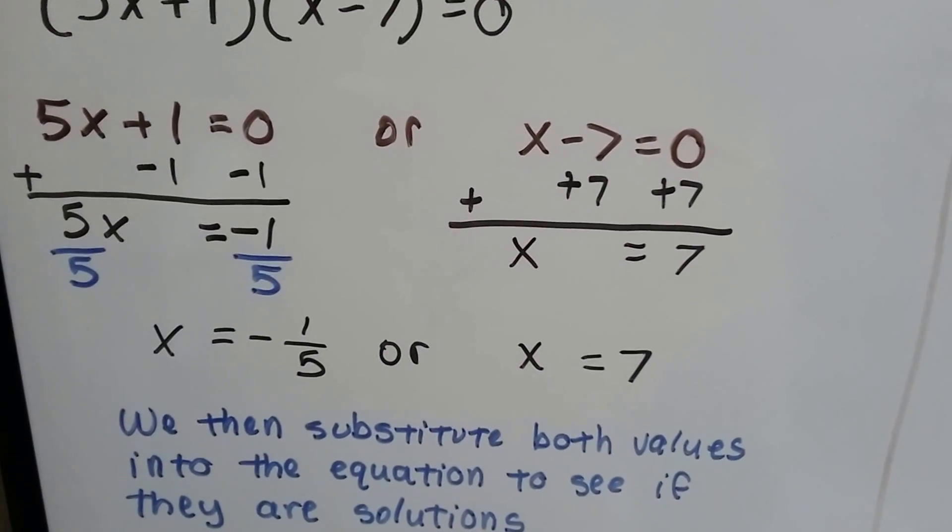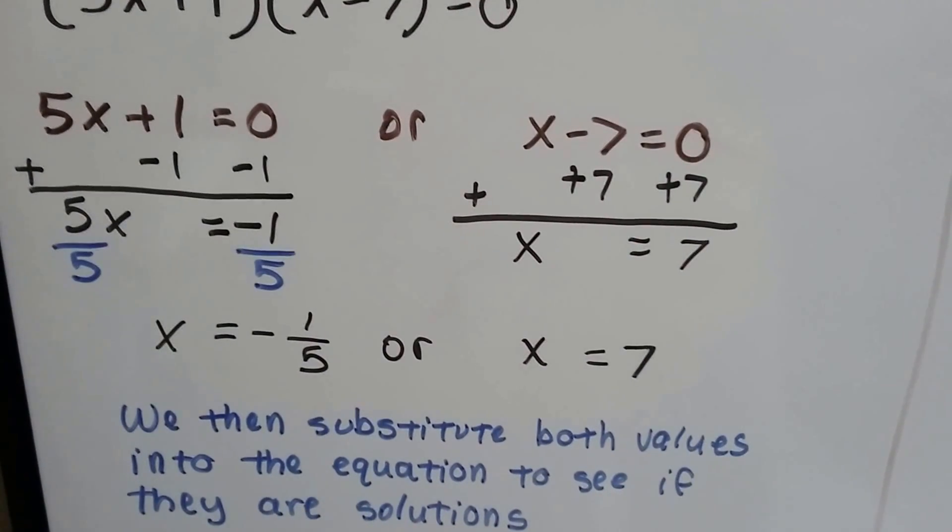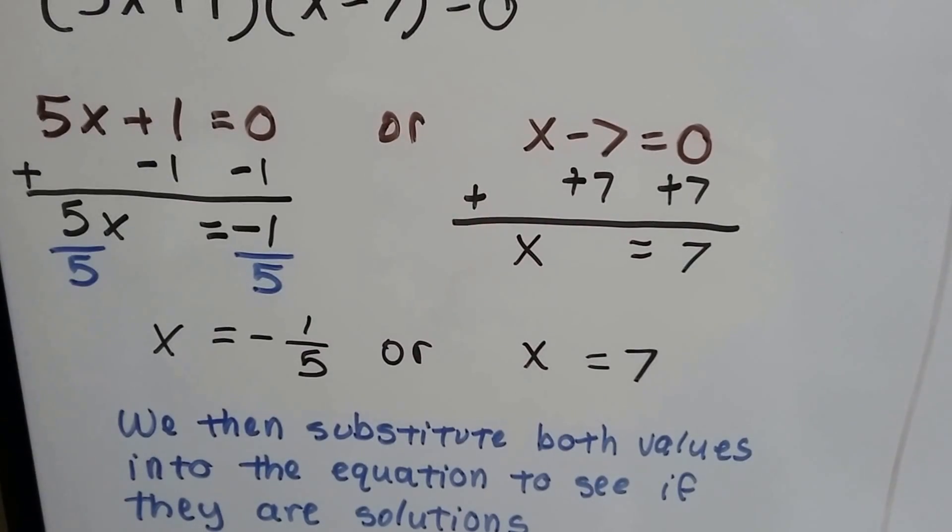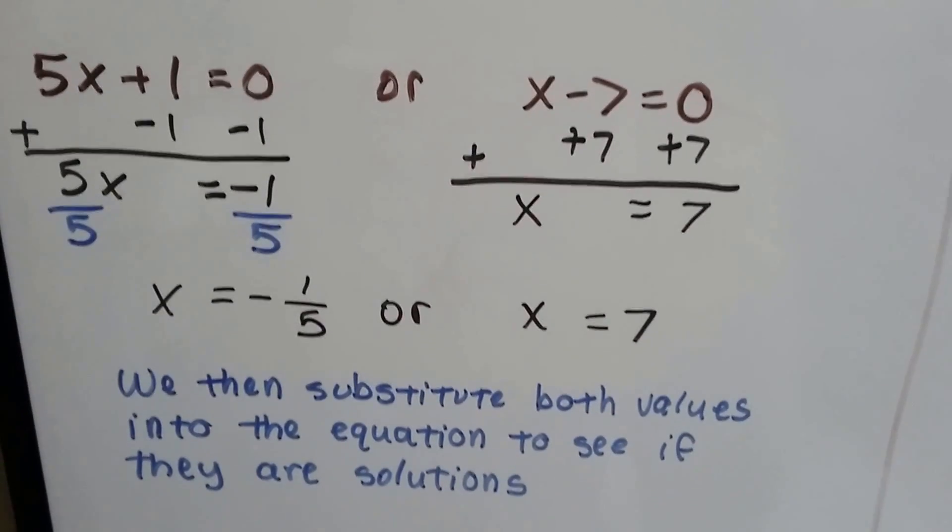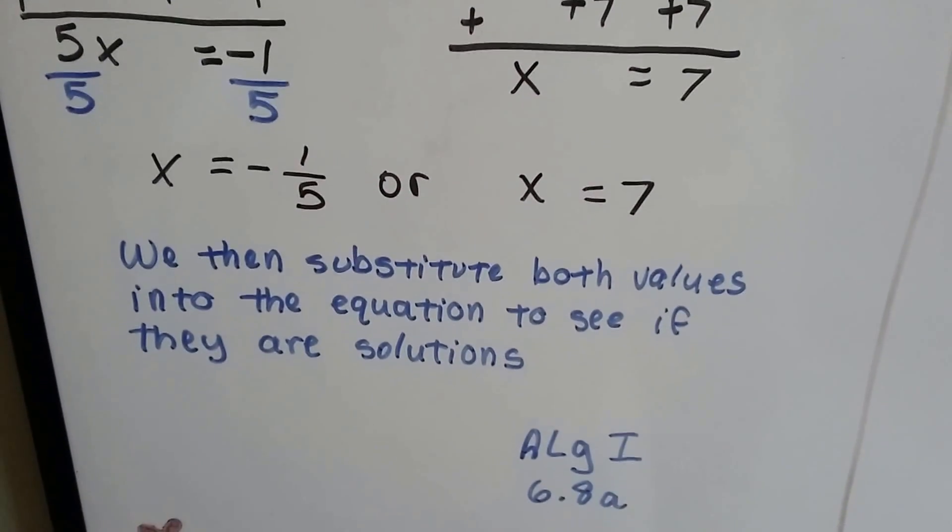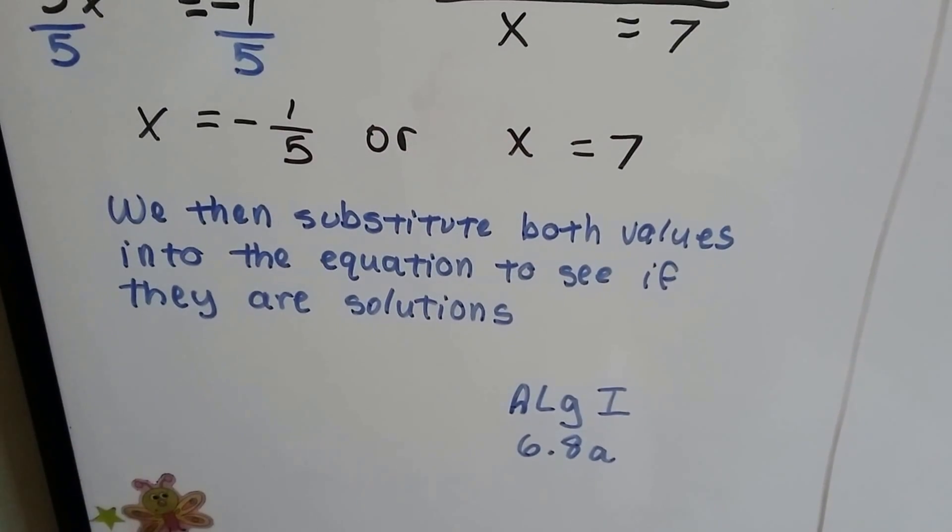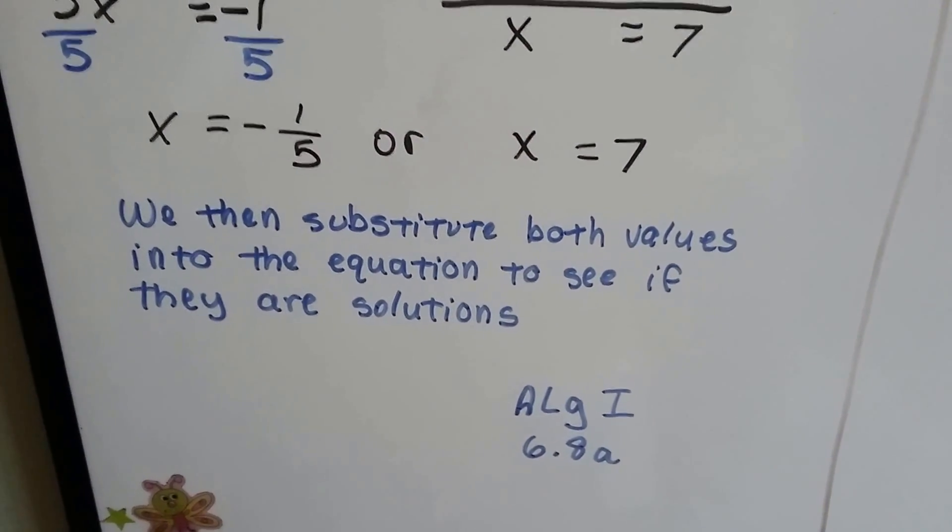We solve for each side using additive inverses. It's going to give us x = -1/5 or x = 7. We substitute both values into the original equation to see if there are solutions. We did this in Algebra 1 back in video 6.8a.